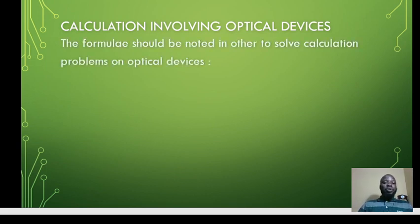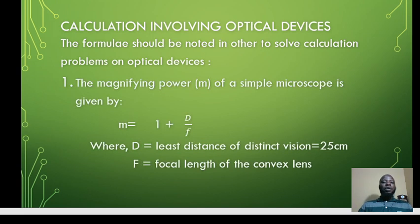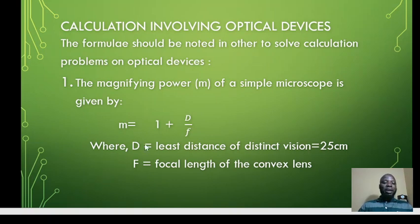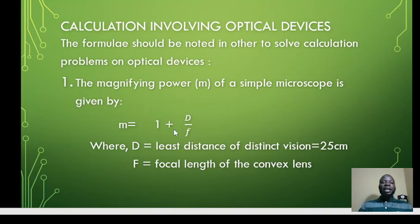The following formulas should be noted regarding optical devices. The first one is for a simple microscope. Remember, a simple microscope is the same thing as a magnifier or a single convex lens. The formula for calculating its magnification is M equals 1 plus D over F, where D is the least distance of distinct vision, and F is the focal length of the lens.